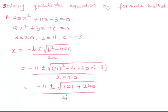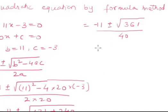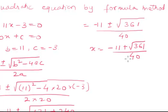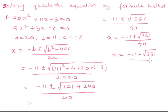Divided by 2 times 20, which is 40. So we get minus 11 plus or minus under root of 361, all over 40. This includes two values of x: x equals minus 11 plus under root of 361 over 40, and x equals minus 11 minus under root of 361 over 40.